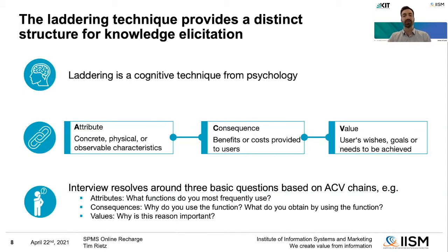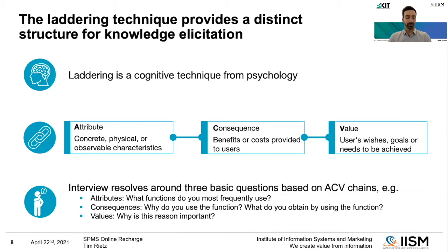Laddering essentially combines three levels of abstractness in the concepts it addresses. We start with a concrete attribute — a physical or observable characteristic of a product.